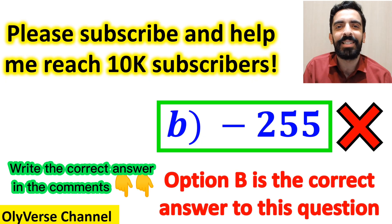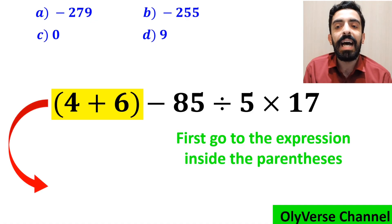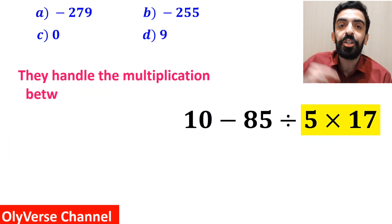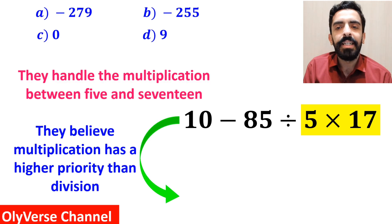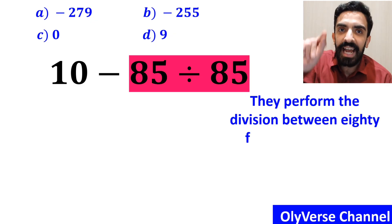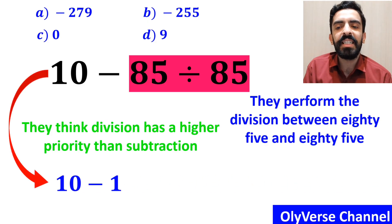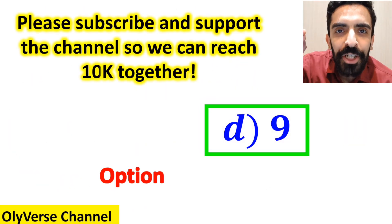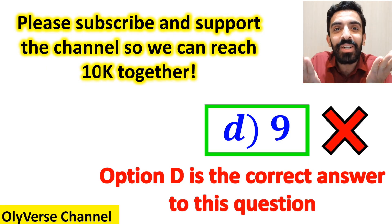However, that is not the correct answer. Some other people first go to the expression inside the parenthesis and write it as 10 minus 85 divided by 5 times 17. Then they handle the multiplication between 5 and 17 first, because they believe multiplication has higher priority than division, giving 10 minus 85 divided by 85. Then they perform the division to get 10 minus 1, which gives 9. They conclude option D is the correct answer — but we were tricked, and it is not correct either.